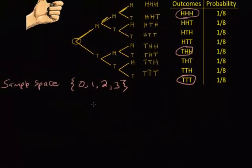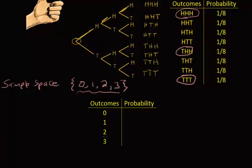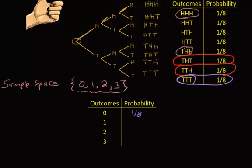Let's bring out a probability distribution with those outcomes listed. Now that I have my outcomes on the left-hand side, I can write in their associated probabilities on the right. Looking at the sample space from flipping a coin three times, the probability of getting no heads: that happens only once, so the probability is one-eighth. For one head, we find one here, two here, and three here in the sample space.